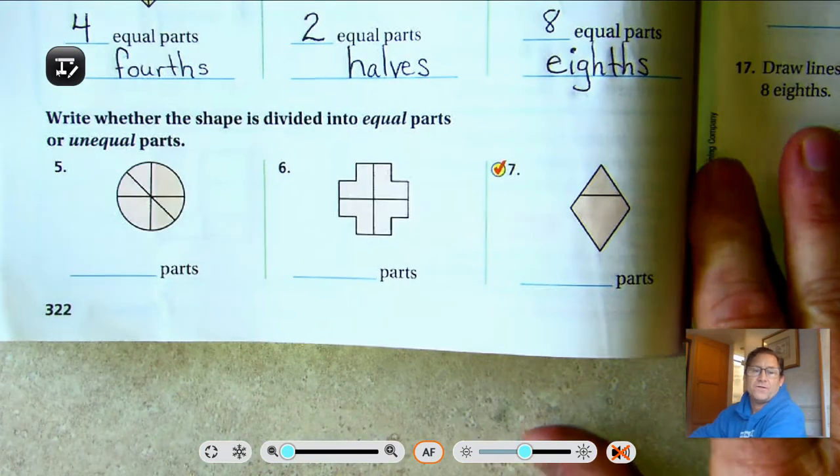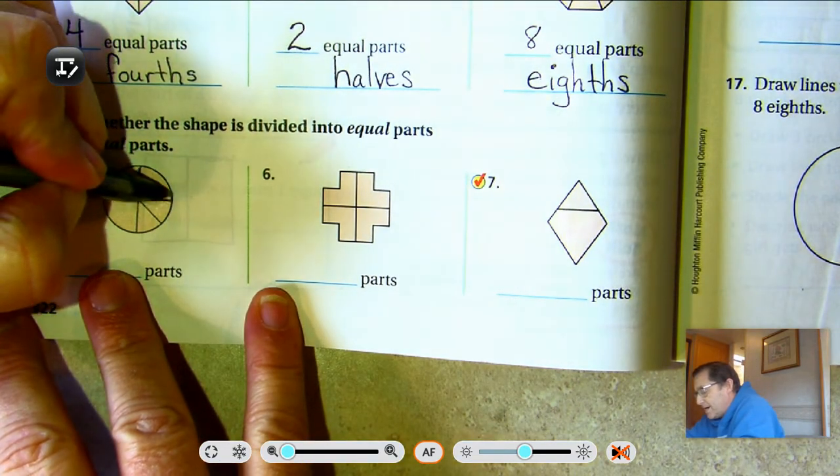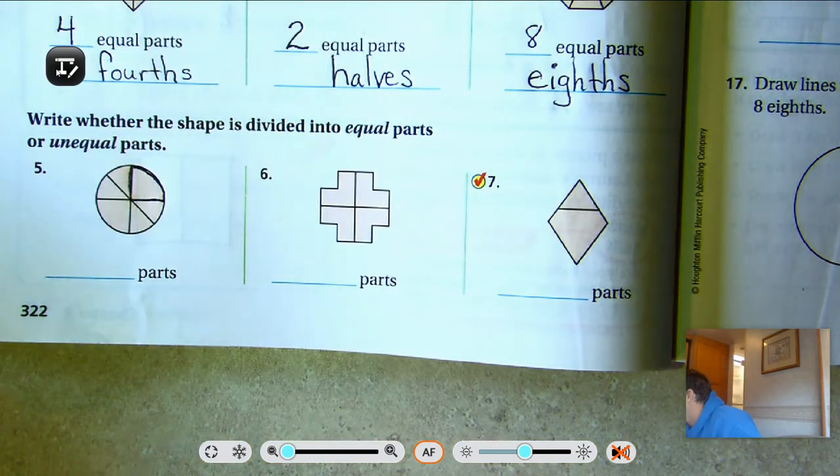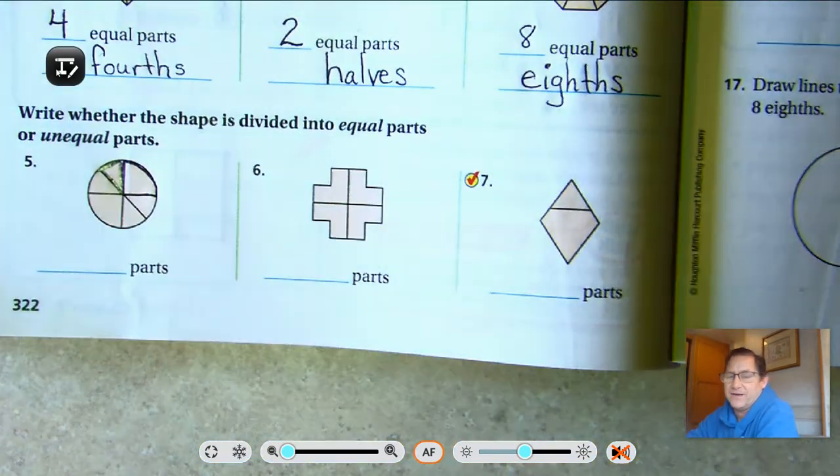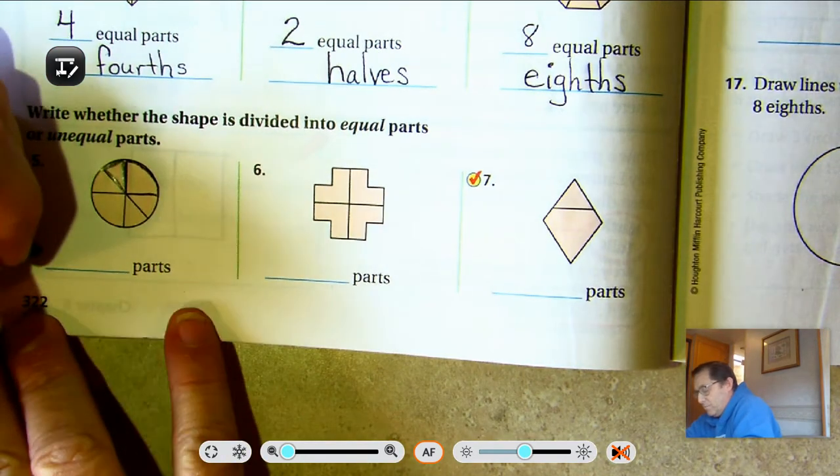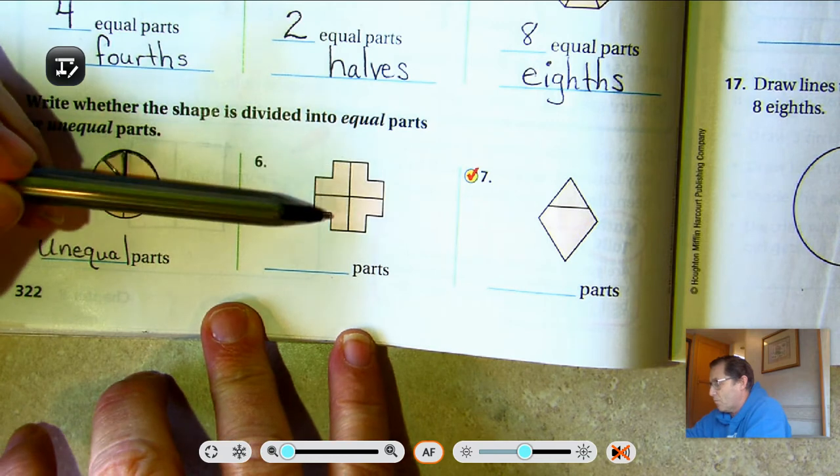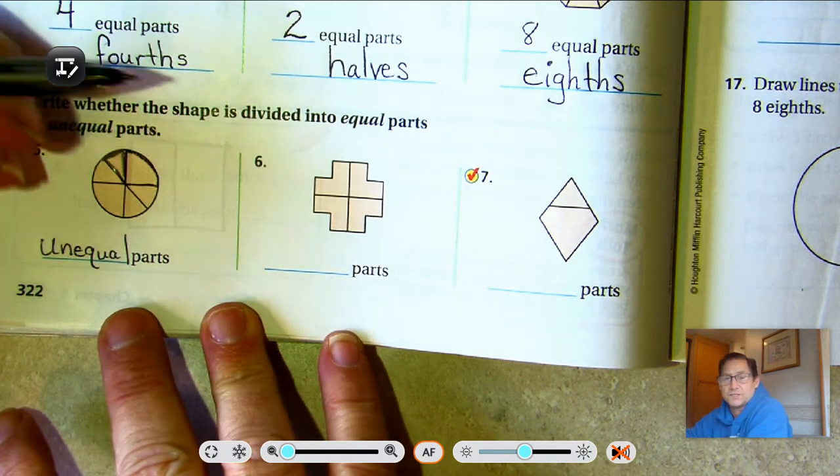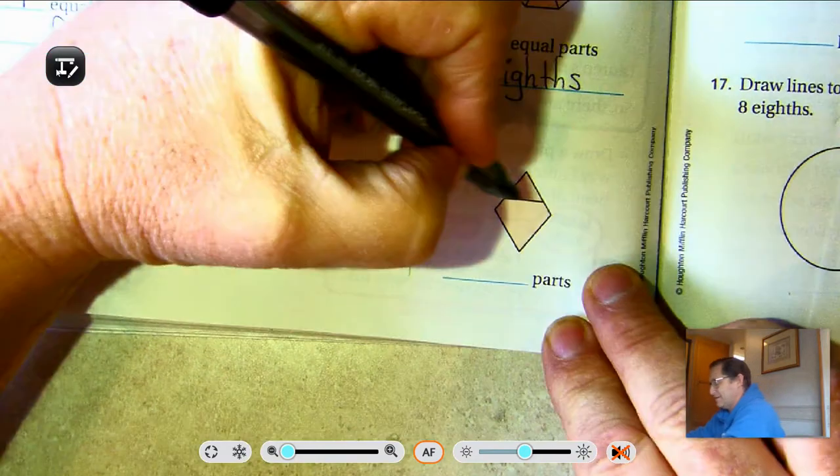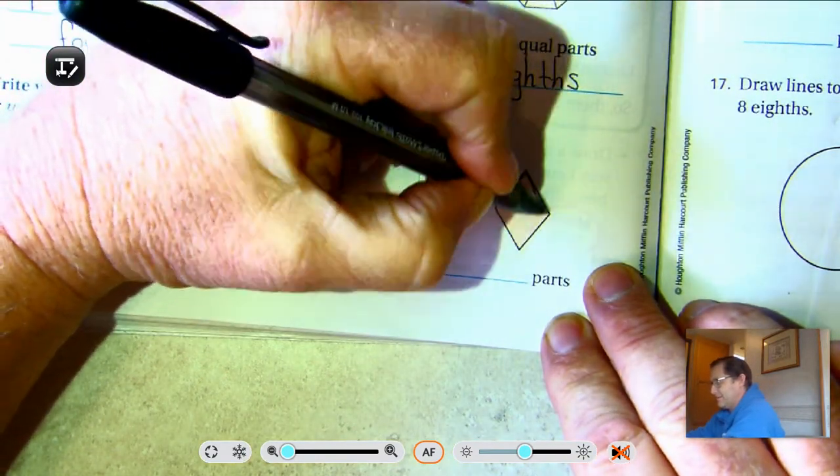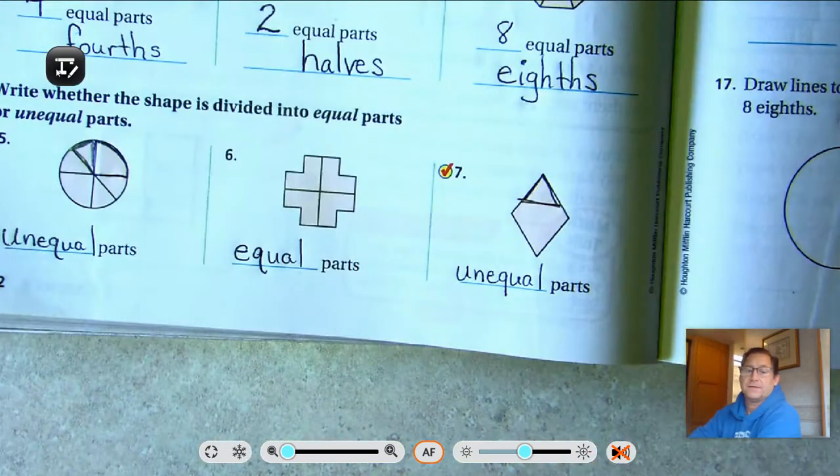Number five, write whether this shape is divided into equal parts or unequal parts. Well, when I look at this triangle here and compare it to this triangle, those aren't the same size, are they? So this has to be unequal parts. Now this one, they look like there's four equal parts. So I'm going to say equal. And then seven, this triangle is definitely not the same shape as the bottom section. So unequal parts.